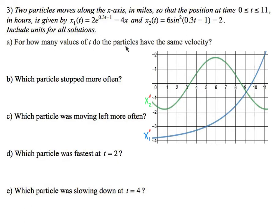How many values of t do the particles have the same velocity? If I'm looking for the same velocity, I'm looking for the derivative of each equation being equal. Velocity is the derivative of position, so I want to know where each derivative is equal. Since this picture shows the velocity graphs, they're equal at that one intersection point — the red dot. So they have the same velocity just one time.